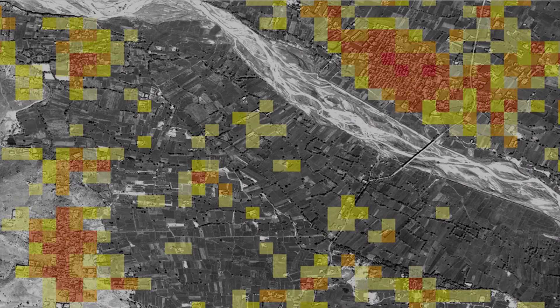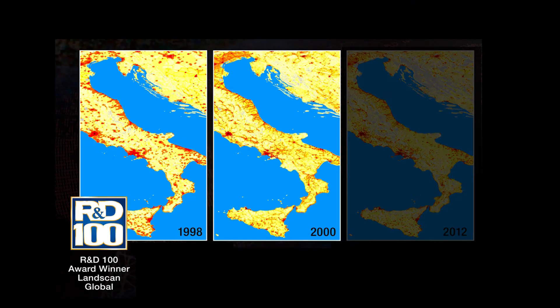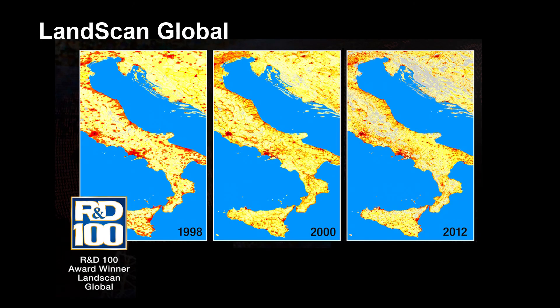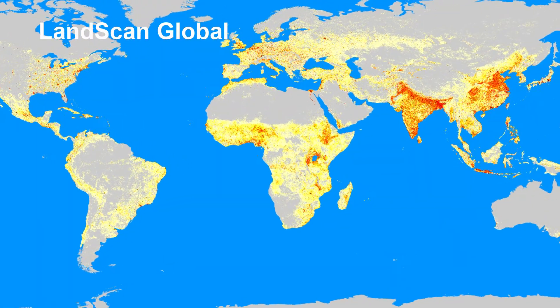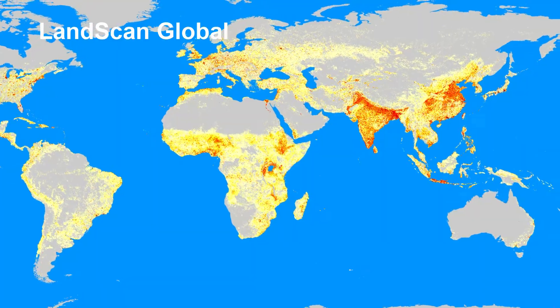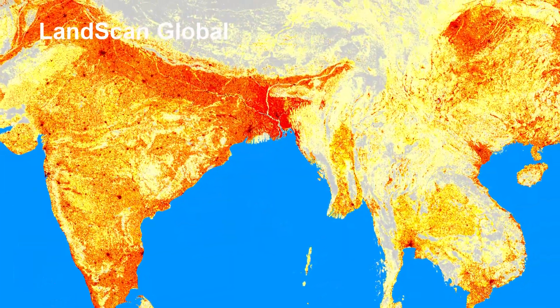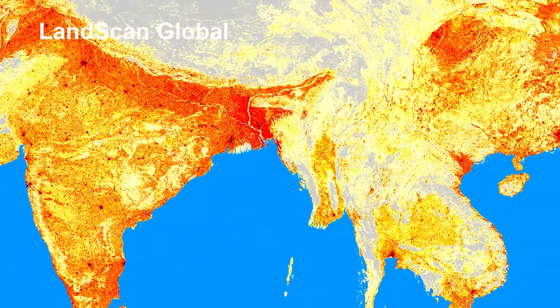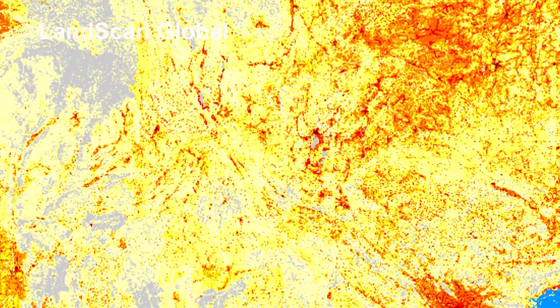Since 1997, we have been producing the global population database, LandScan Global. LandScan Global combines spatial data and imagery analysis with the latest census findings and updated political boundaries to provide an accurate and unprecedented population value of every square kilometer of landmass on Earth.